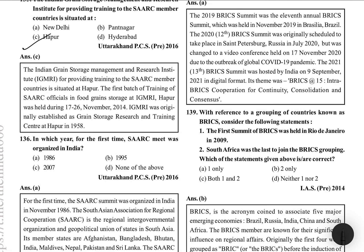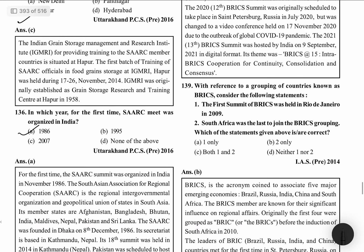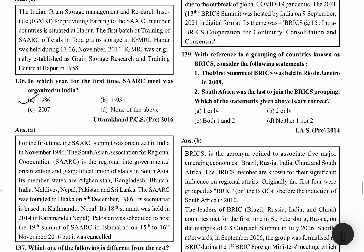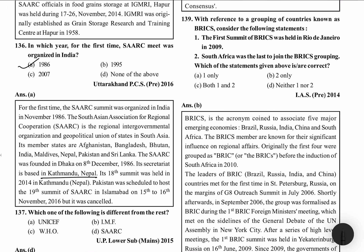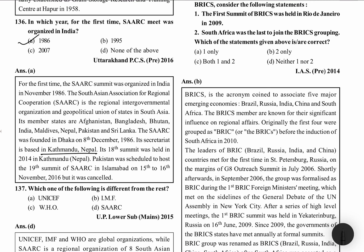Which year for the first time was the SAARC meet organized? The first SAARC meet was organized in 1986. SAARC is a regional intergovernmental organization and geopolitical union of states in South Asia. Members are Afghanistan, Bangladesh, Bhutan, India, Maldives, Nepal, Pakistan and Sri Lanka. SAARC was founded in Dhaka on 8 December 1986. Its secretariat is based in Kathmandu, Nepal. The 18th summit was in Kathmandu in 2014. Pakistan was scheduled to host the 19th summit in Islamabad on 15-16 November but it was cancelled.